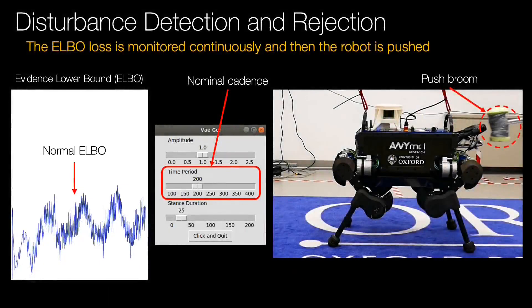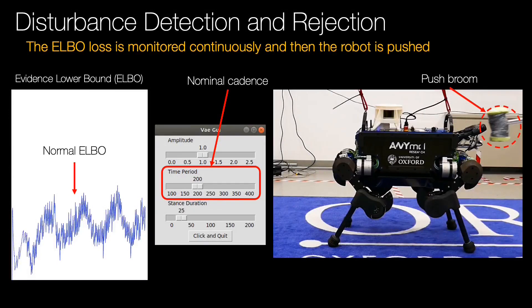Since we are using a generative model in our approach, we can characterise disturbances as out of the distribution seen during training. To measure this, we use the evidence lower bound (ELBO), which is recorded as the VAE planner is operating. Any disturbance of the robot will cause a spike in the ELBO. The VAE planner subsequently increases the robot's cadence as an automatic response to the disturbance. Please note the push broom in the upper right hand corner of the robot image.